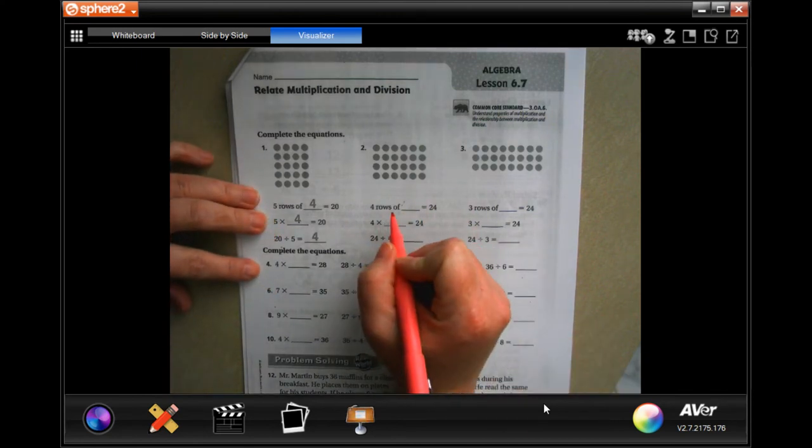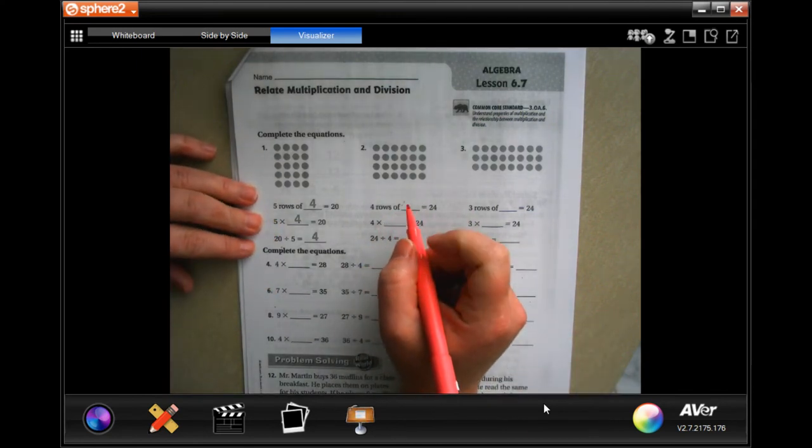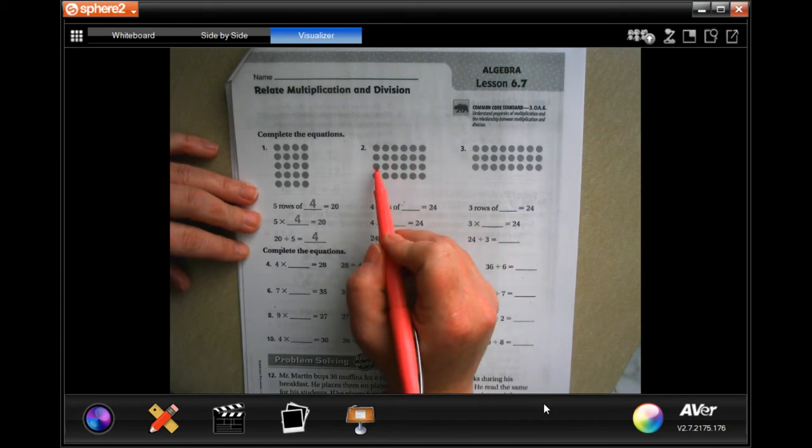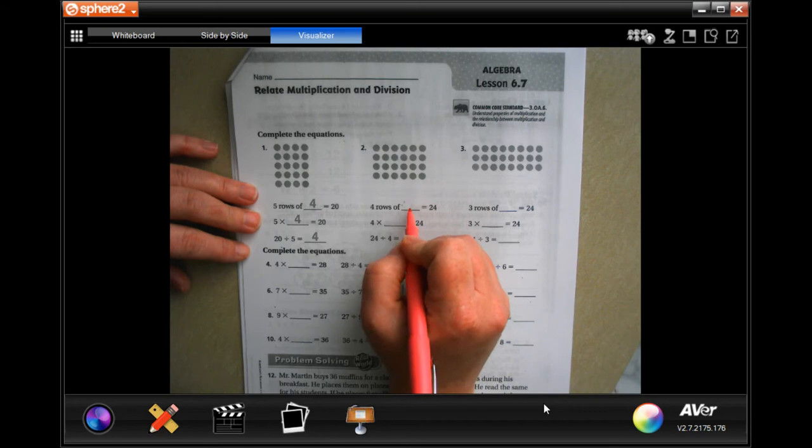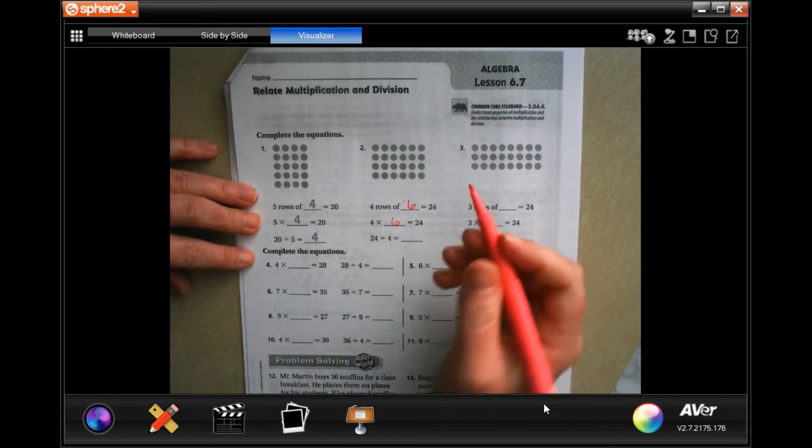There are one, two, three, four rows and one, two, three, four, five, six across. So four times six is 24, which also means that 24 divided by four is six.